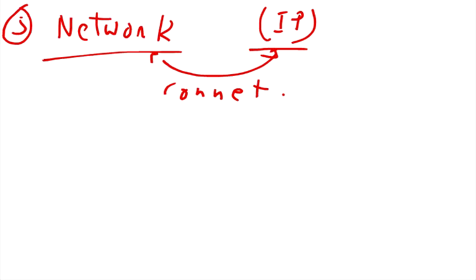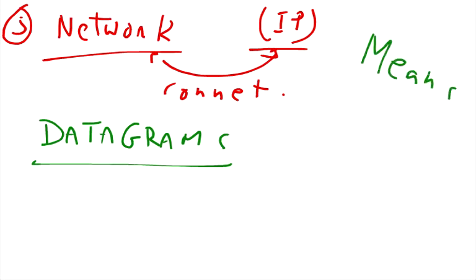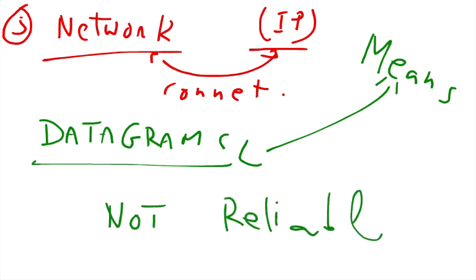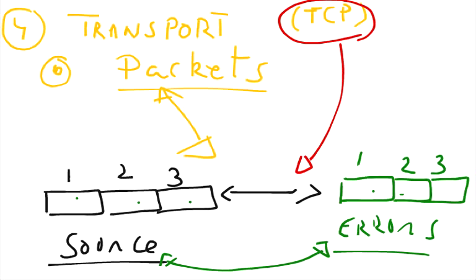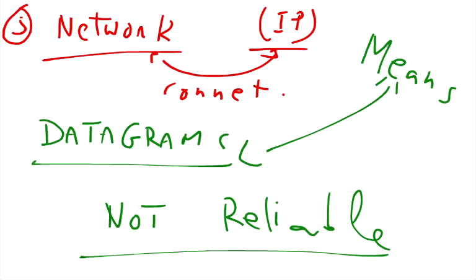The main purpose or main responsibility of the network layer is to provide means of transferring variable-length data sequences, which are called datagrams. Its main purpose is to provide means for transferring datagrams from one node to another node. It is not a reliable connection — it's an unreliable connection — and it is the responsibility of the transport layer to do the reliable transportation.